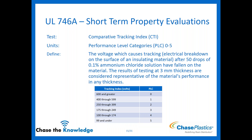CTI — Comparative Tracking Index — is the voltage which causes tracking, also known as electrical breakdown on the surface. PLC values apply here as well: 600 volts or greater gives you a zero, all the way down to under 100 volts gives you a five. Lower number means better performance.